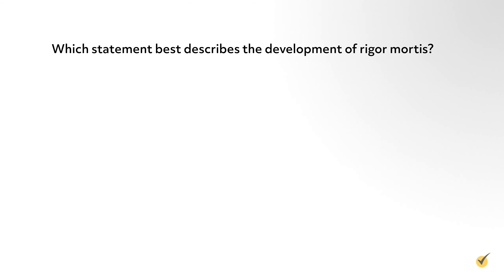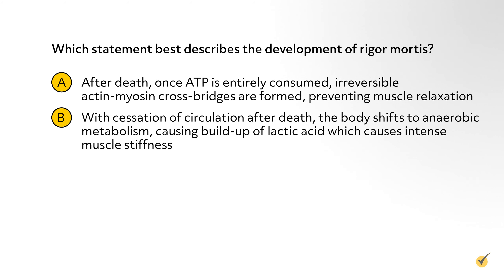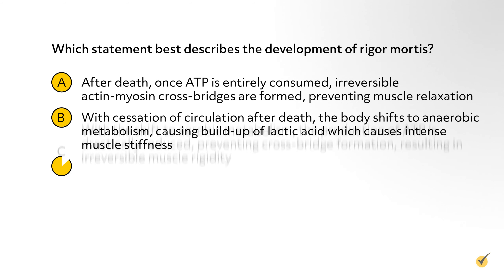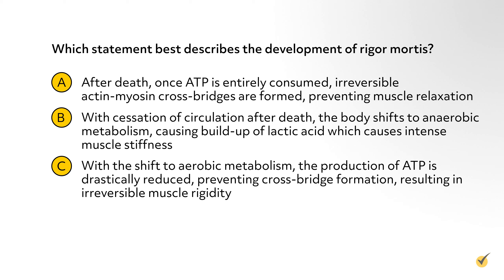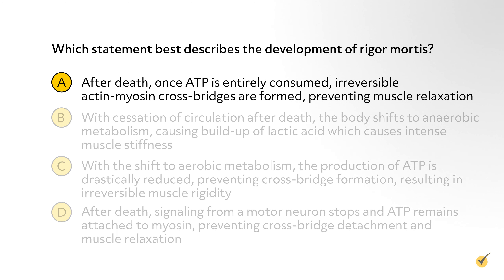Number two: which statement best describes the development of rigor mortis? A: after death, once ATP is entirely consumed, irreversible actin-myosin cross bridges are formed, preventing muscle relaxation. B: with cessation of circulation after death, the body shifts to anaerobic metabolism, causing buildup of lactic acid, which causes intense muscle stiffness. C: with the shift to aerobic metabolism, the production of ATP is drastically reduced, preventing crossbridge formation, resulting in irreversible muscle rigidity. Or D: after death, signaling from a motor neuron stops, and ATP remains attached to myosin, preventing crossbridge detachment and muscle relaxation. The correct answer is A.